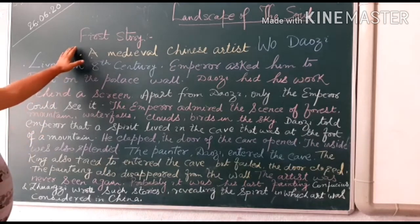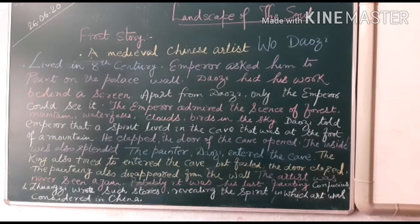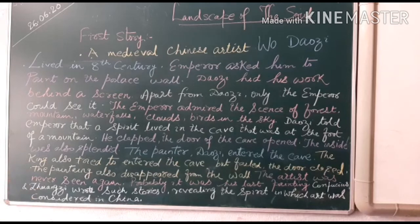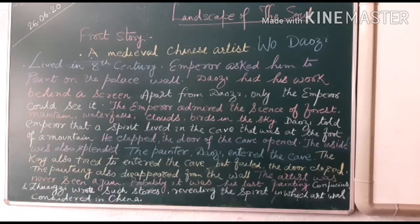Let's see the first story. A medieval Chinese artist, Wu Daozi, lived in the 8th century. The emperor of that time asked him to paint on the palace wall. Daozi hid his work behind a screen, and apart from Daozi, only the emperor could see that painting.